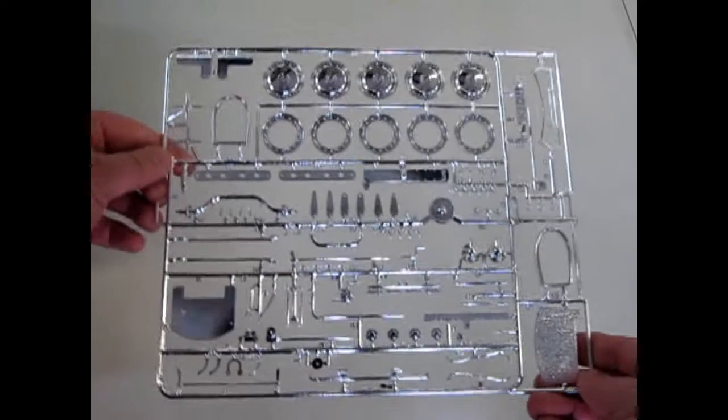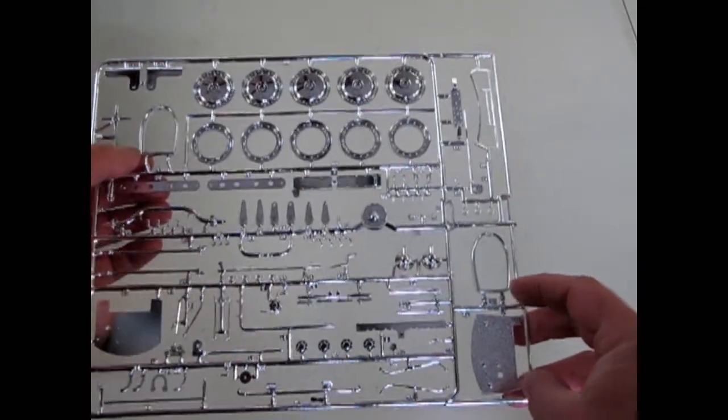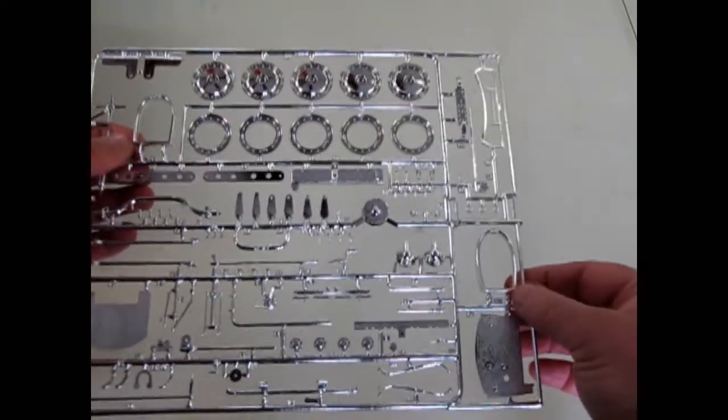And then we've got our chrome. Now, you'll notice there's two radiators here. Radiator shrouds. So, one is for this car, and the other is just a spare for one of the other kits in the Italieri line.